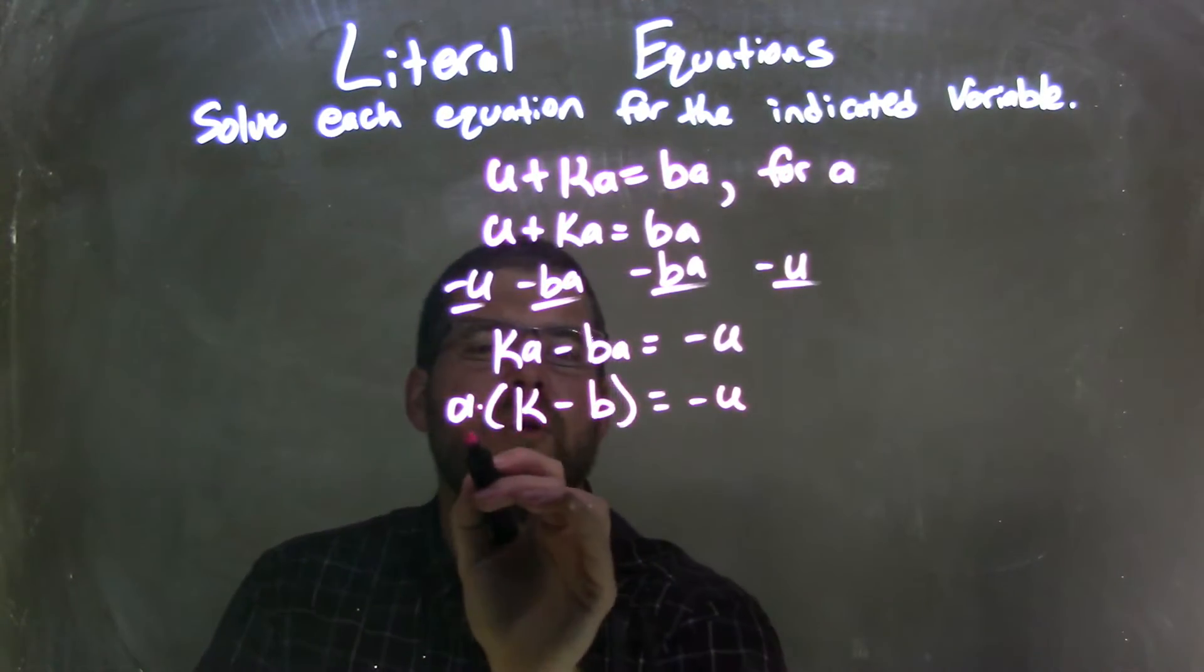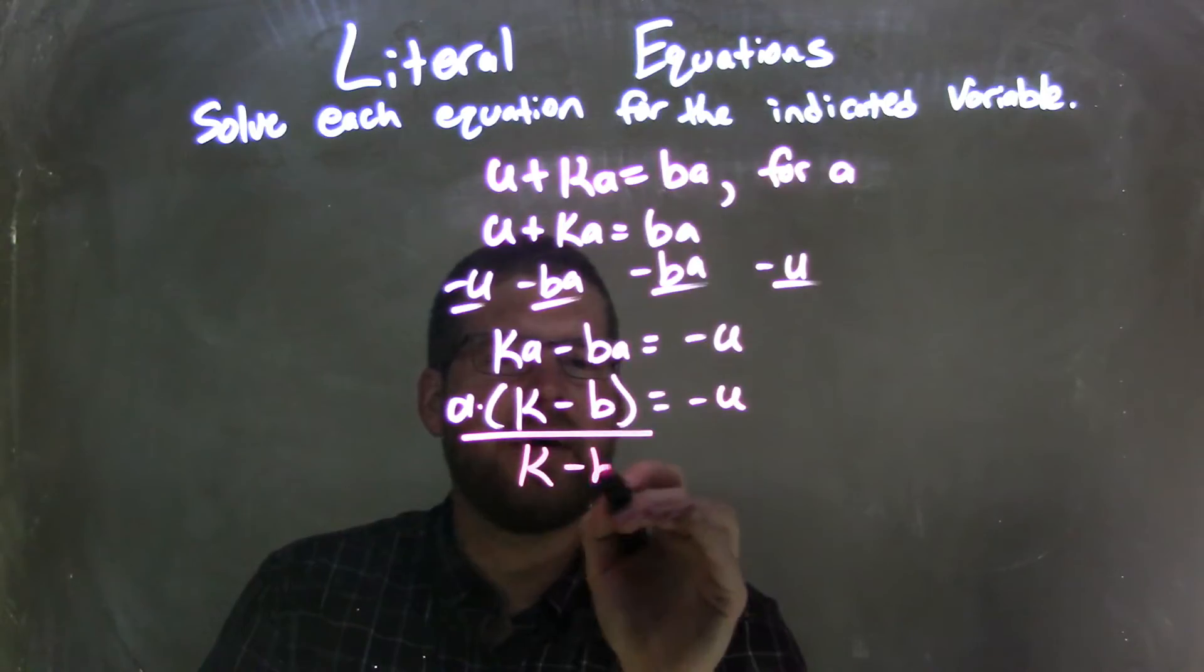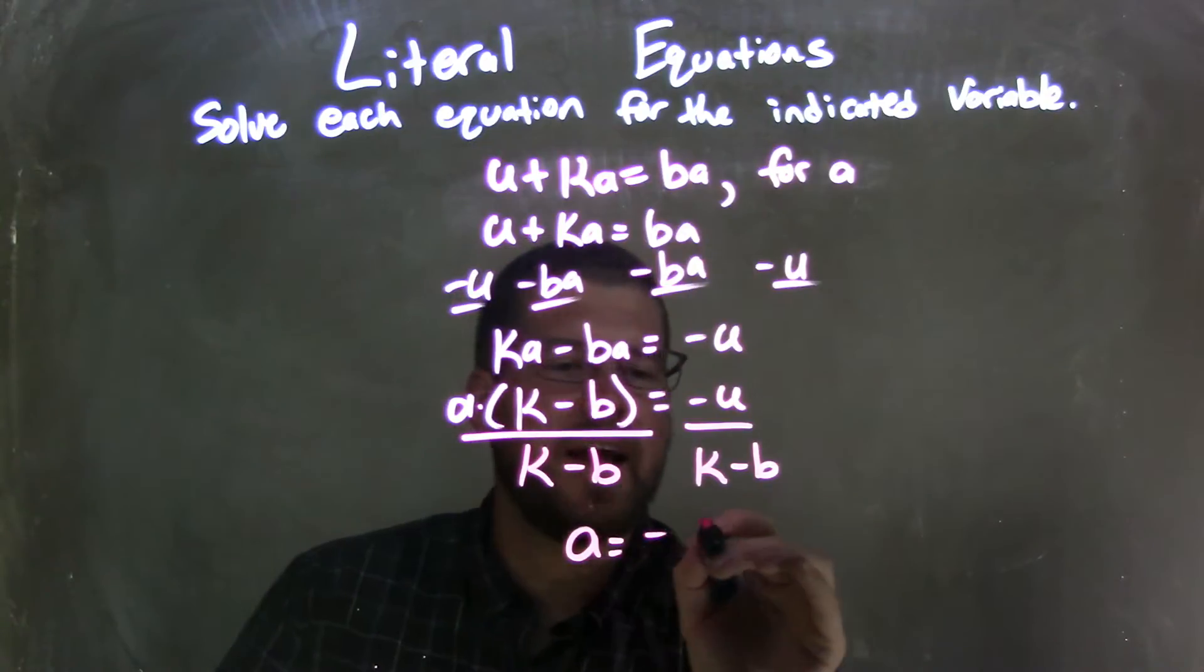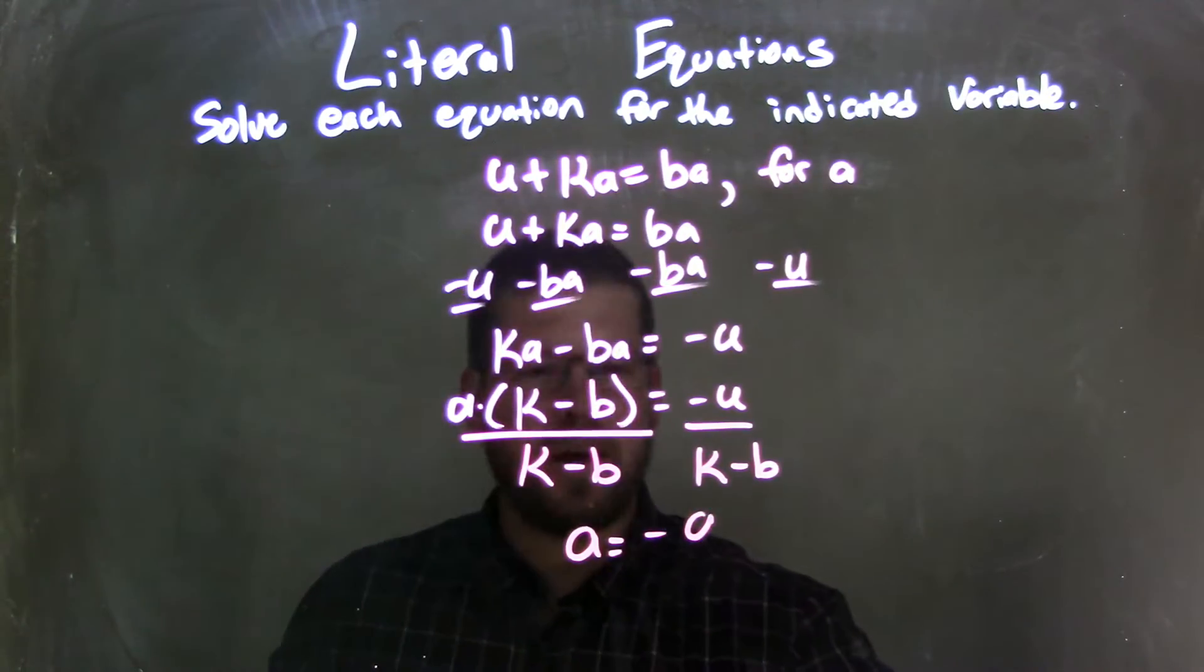I see that there's multiplication. So opposite of multiplication is division, so I can divide by k minus b to both sides. And that leaves me with a by itself on the left and a negative u,